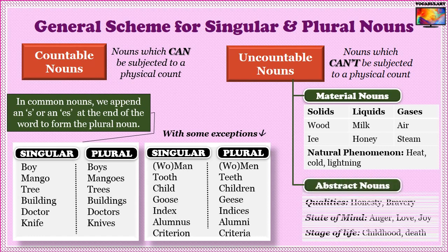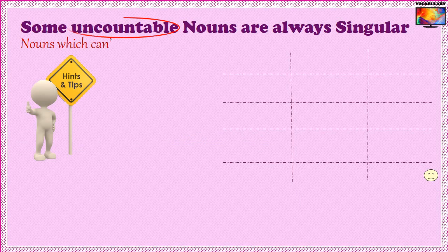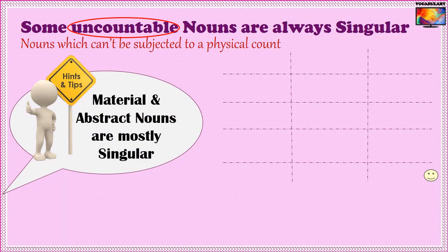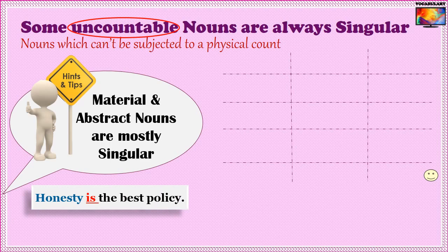Even abstract nouns that stand for qualities, state of mind, or state of life — such as 'bravery,' 'honesty,' 'happiness,' 'childhood' — are uncountable. One very important tip: material and abstract nouns and other uncountable nouns are considered singular. When you use such uncountable nouns as subjects, they will take singular verbs. For instance, 'Honesty is the best policy' and 'Milk is good for health.'